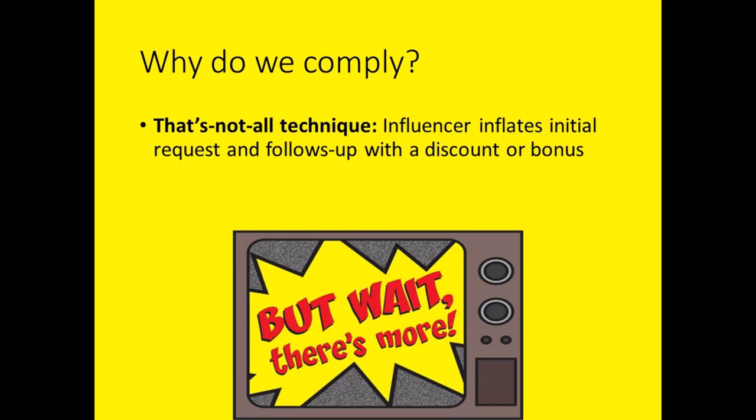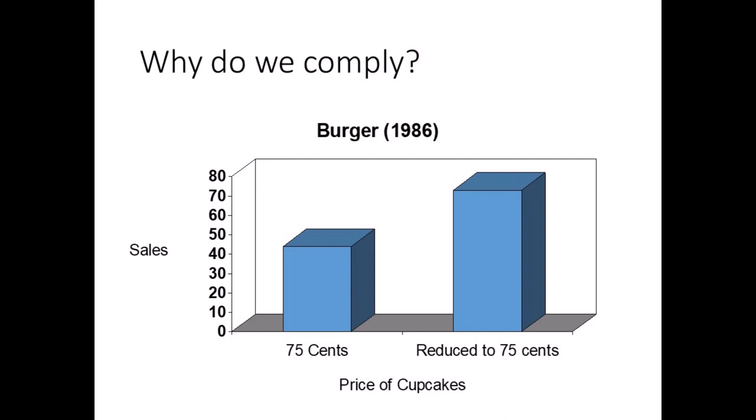Finally, the that's-not-all technique: the influencer inflates their initial request and then seemingly decreases it with a discount or bonus. They end up where they need to end up, but the target perceives an apparent deal. In the 1980s, Burger sold cupcakes to students on campus. Some customers were told the price was 75 cents, and 44% made a purchase. Others were initially told the price was $1, but before they could respond, the researcher discounted the cupcake to 75 cents — under these conditions, 73% bought a treat.